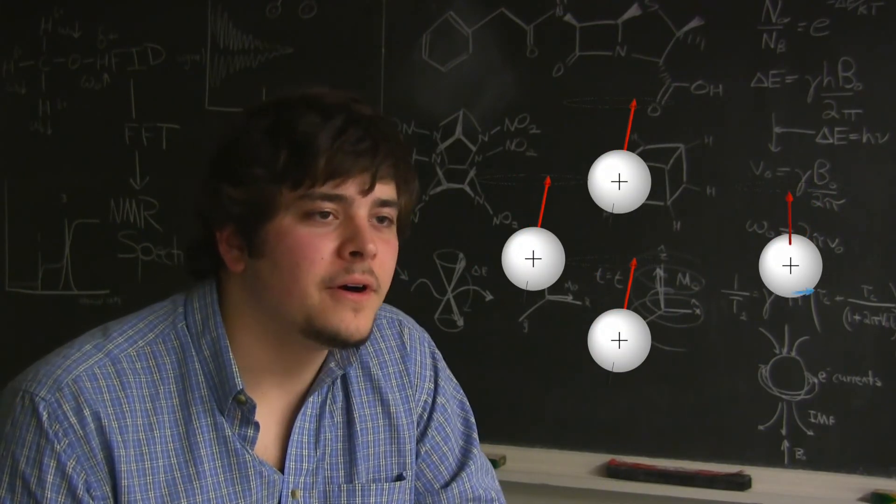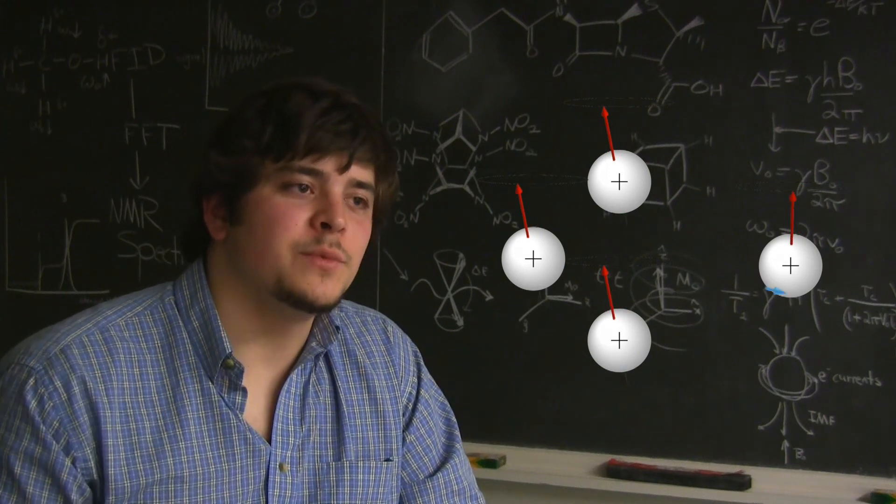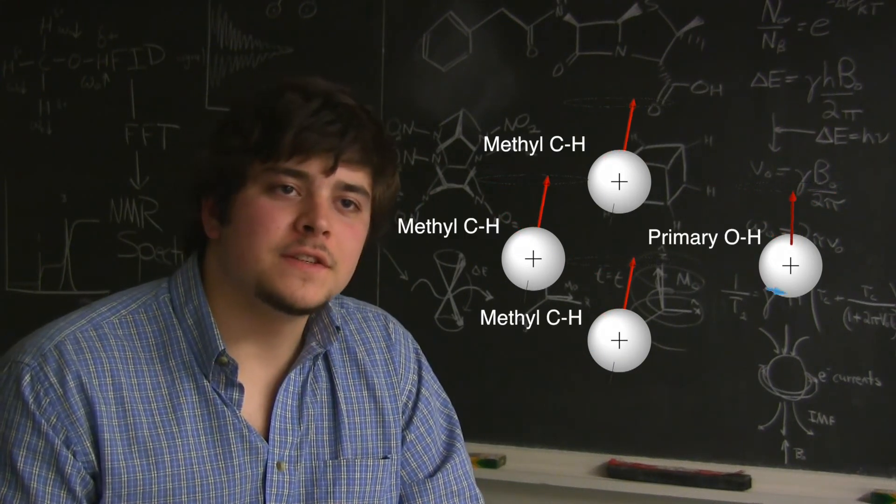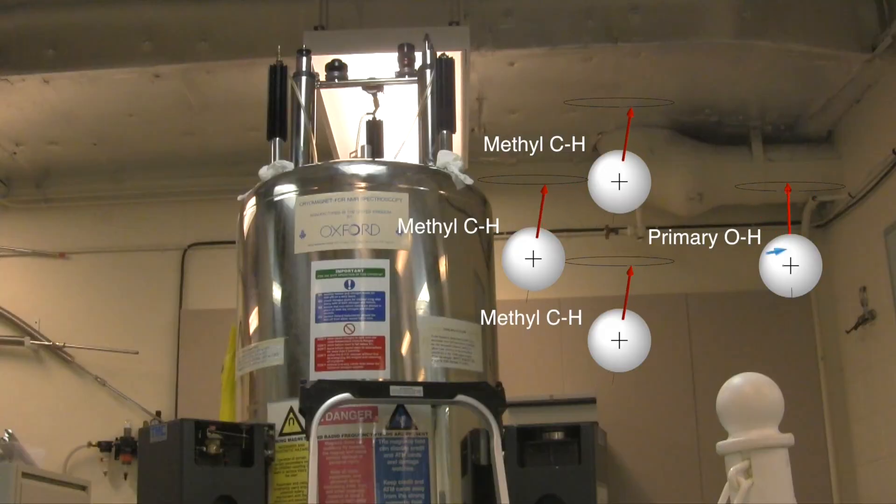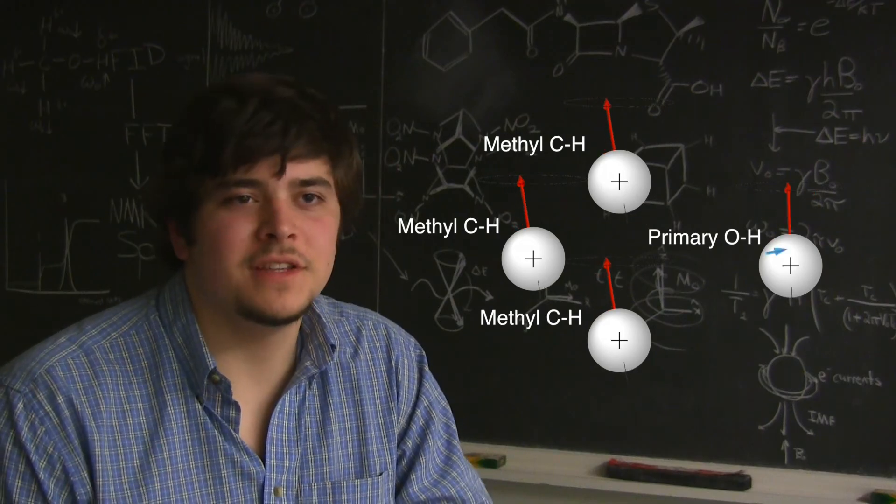So now I understood NMR. If we could read these precessional speeds, these Larmor frequencies, we could identify the bonds in a sample, because each Larmor frequency is associated with a unique bond. This is what the NMR reads when it interacts with these nuclei. So how does the machine read these frequencies?